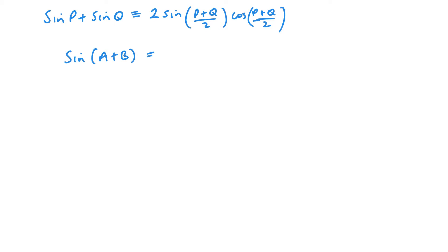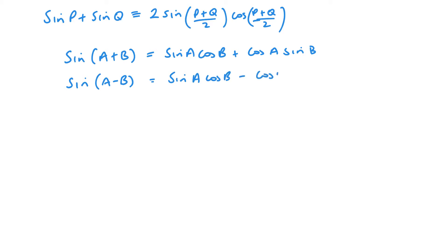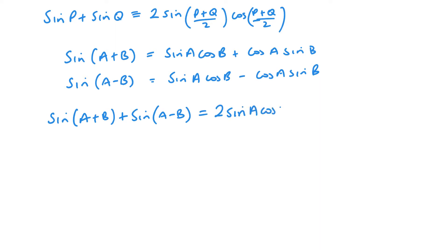Let's start with sin(A+B), which equals sin A cos B + cos A sin B, and also sin(A-B), which equals sin A cos B - cos A sin B. If I add them together — sin(A+B) + sin(A-B) — I get 2 sin A cos B, because the cos A sin B and the negative cos A sin B cancel to zero.